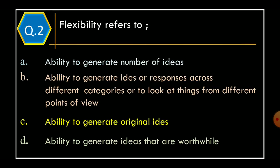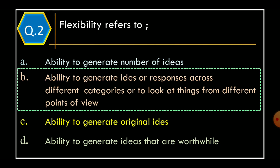Question 2: Flexibility refers to - Option A: Ability to generate number of ideas; Option B: Ability to generate ideas or responses across different categories or to look at things from different points of view; Option C: Ability to generate original ideas; Option D: Ability to generate ideas that are worthwhile. The correct option is Option B, Ability to generate ideas or responses across different categories or to look at things from different points of view.